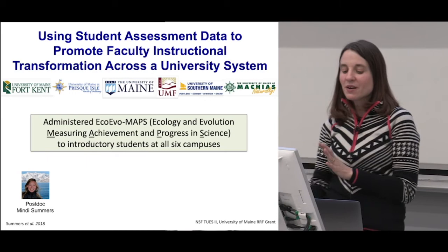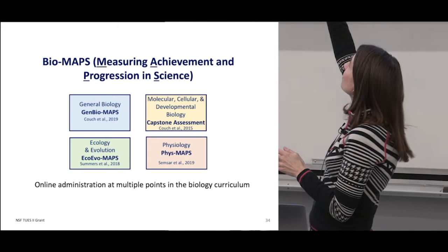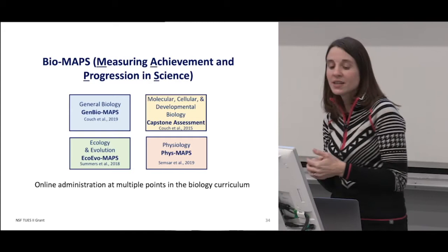EcoEvoMaps is part of a suite of assessments including general bio, molecular, EcoEvoMaps, and physiology. The idea behind these assessments is that they're given online to students at multiple points in the biology curriculum — so instead of being tied to a particular course, this looks across the whole major.